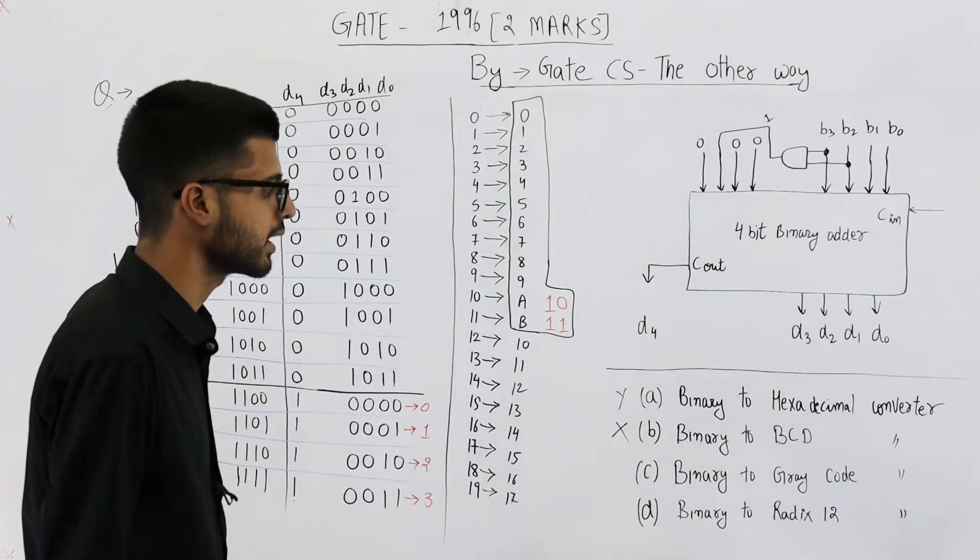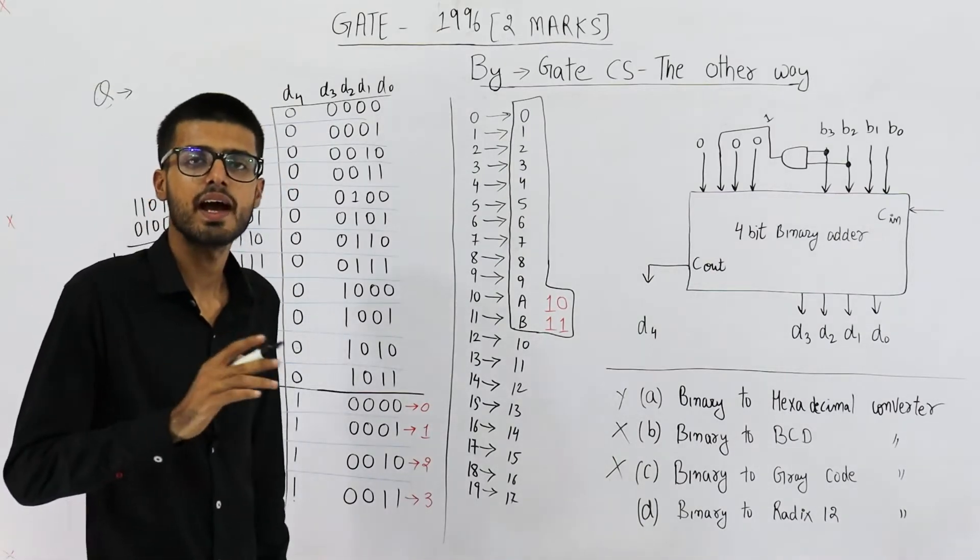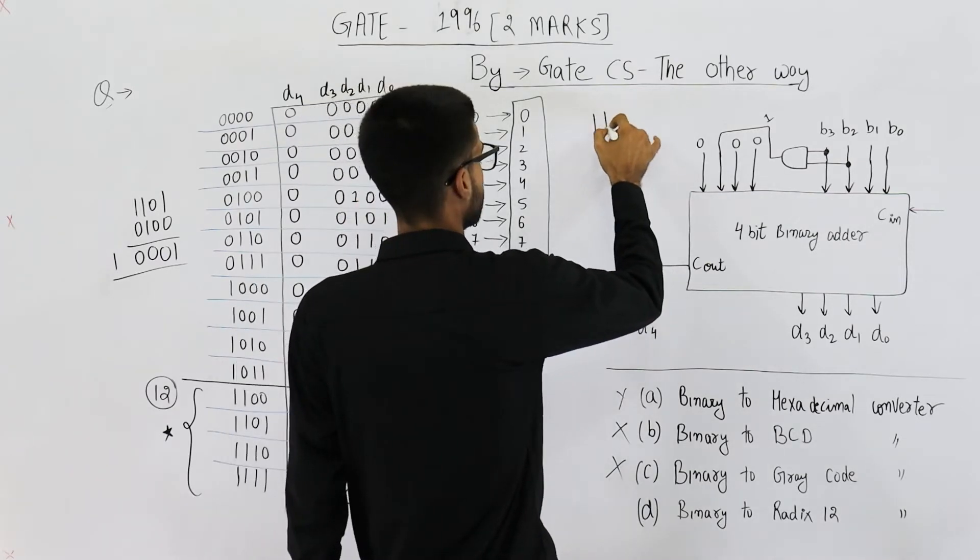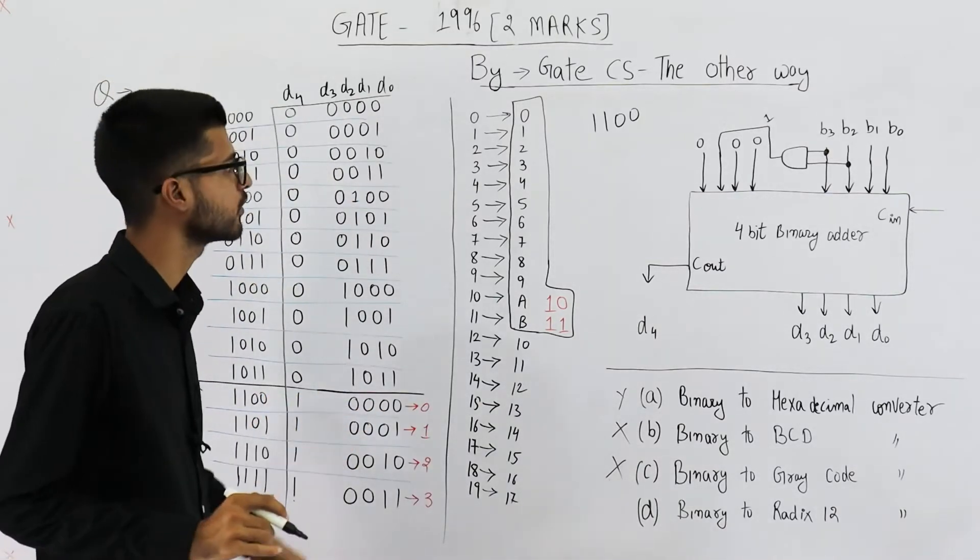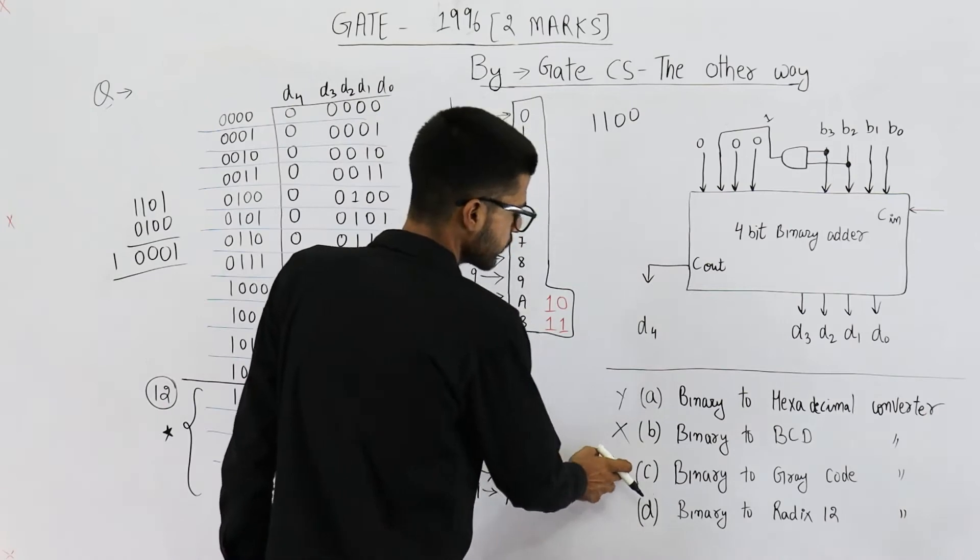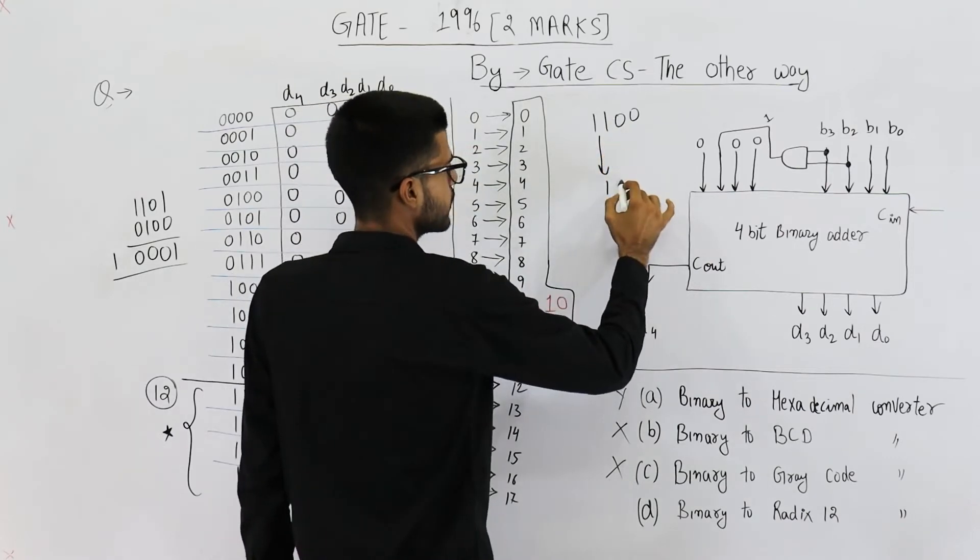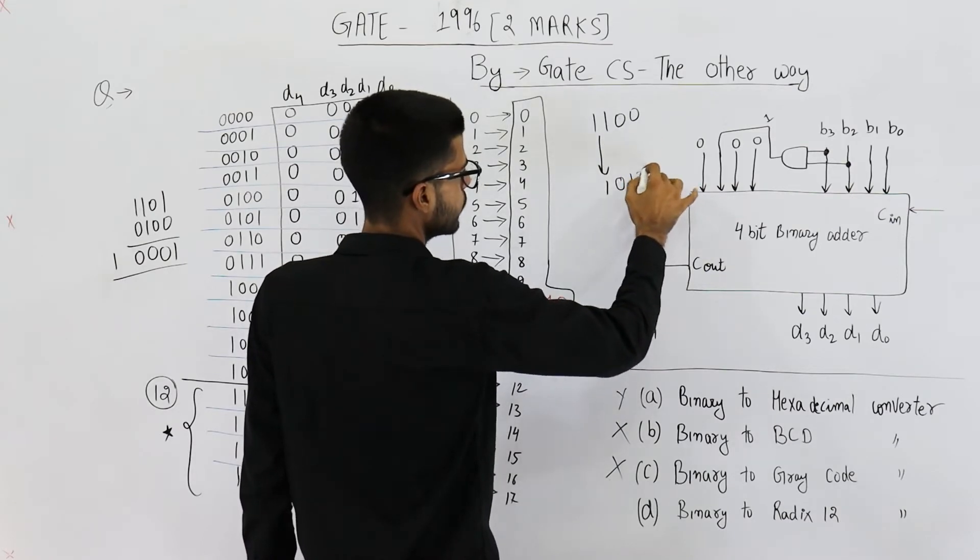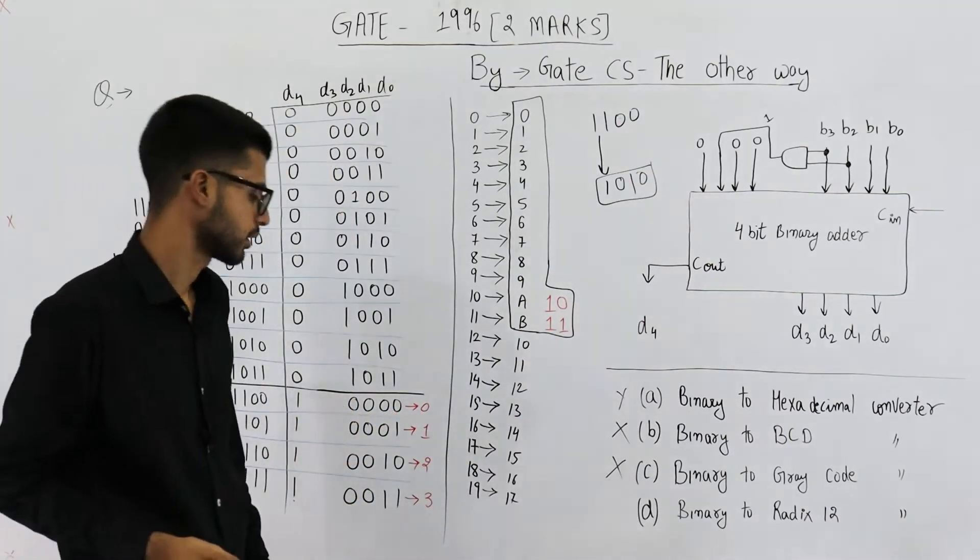Option C says it is a binary to gray code converter. No. A binary to gray code converter is implemented using XOR gates only. For example, if you want to find the gray code for 1100, which is this number. First thing is it will not be a 5-bit number. It will be a 4-bit number only. Here the output is of 5 bits. From here also, we are getting a hint that it's not the option C. Anyways, its gray code will be 1 is copied as it is. Then you take XOR of first two bits. That is 0. Then this bit and this bit XOR. 01 XOR is 1. Then 00 XOR is 0. So this has to be the gray code for 12. But you can see it's not the same number.